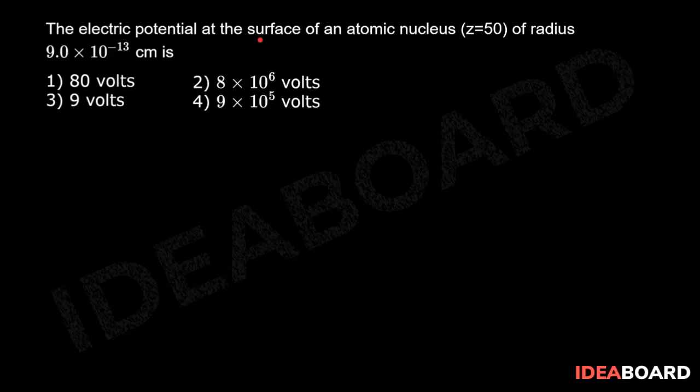The electric potential at the surface of an atomic nucleus Z is equal to 50 of radius 9.0 into 10 power minus 13 centimeter is dash.